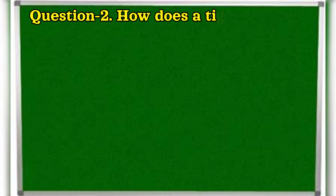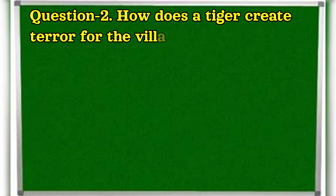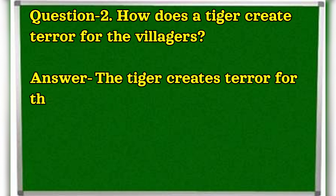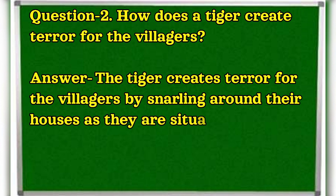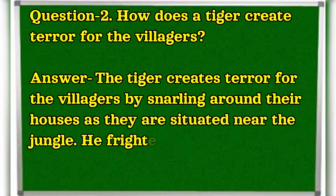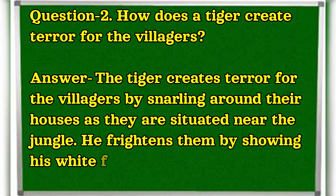Question 2. How does a tiger create terror for the villagers? Answer. The tiger creates terror for the villagers by snarling around their houses, as they are situated near the jungle. He frightens them by showing his white fangs and claws.